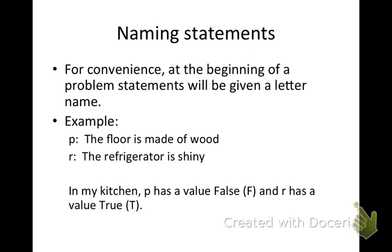Here's an example. P: the floor is made of wood. R: the refrigerator is shiny. So whenever you see P it means the floor is made of wood, and whenever you see R it means the refrigerator is shiny. Sitting here in my kitchen as I make this video, I can see that P has a value of false — my kitchen floor is made of vinyl. And R has a value of true — my refrigerator is kind of shiny.